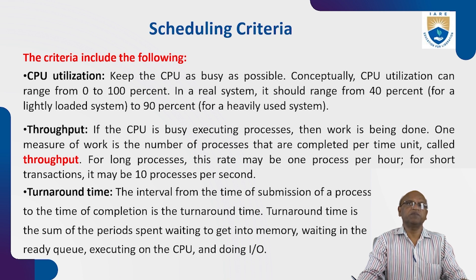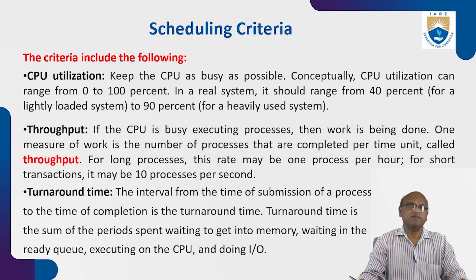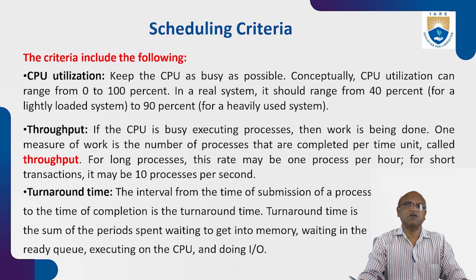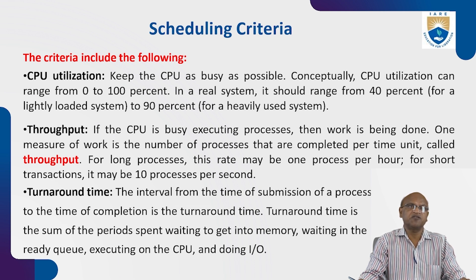Throughput: if the CPU is busy executing processes, work is being done. One measure of work is the number of processes completed per unit of time, called throughput. For long processes, this rate may be one process per hour; for short transactions, it may be 10 processes per second. Throughput means the maximum output taken from the CPU.